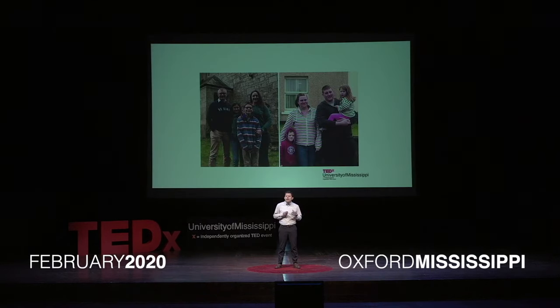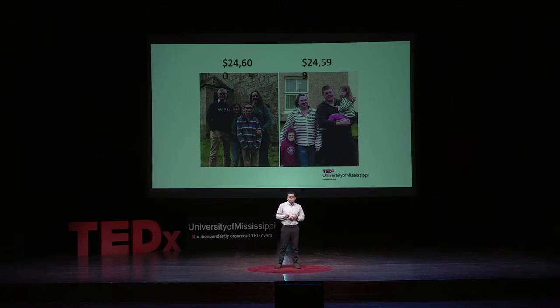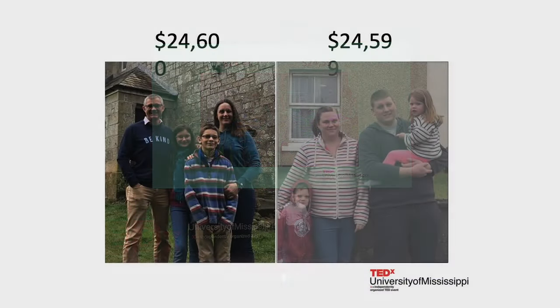Here are two families in the United States. They have similar incomes. However, one family is considered impoverished and the other is not. How could this be possible?